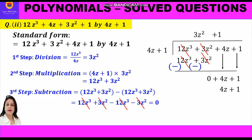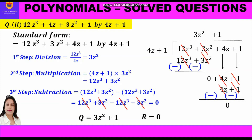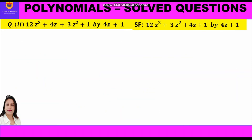The third step is subtraction: we write a minus sign just below and change the signs. We cancel 4z with minus 4z and 1 with minus 1, and we get remainder 0. Therefore the quotient is 3z² plus 1 and remainder is 0.